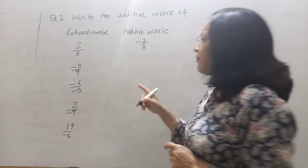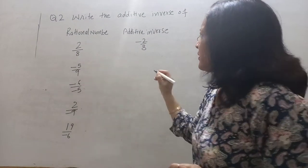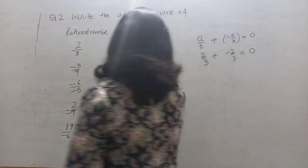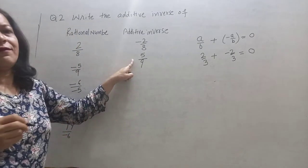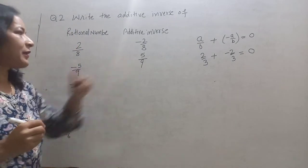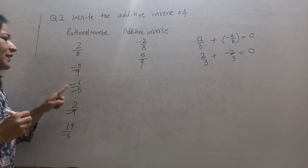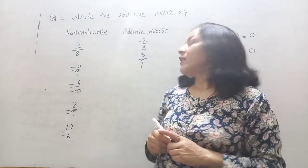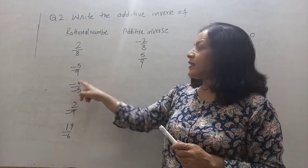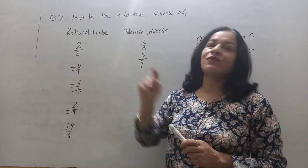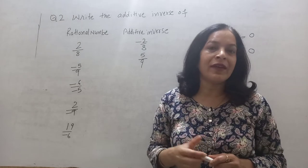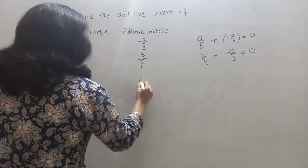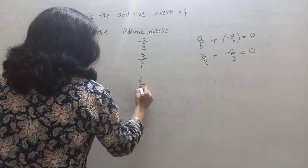Now, 2 upon 8 — what is the additive inverse of minus 5 upon 9? The same numerical part, 5 upon 9, but with positive sign. For minus 6 upon 5, what will the additive inverse be? Plus 6 upon 5.